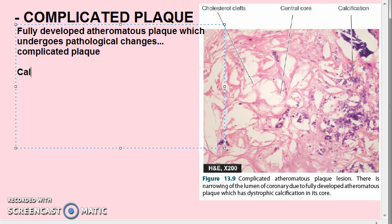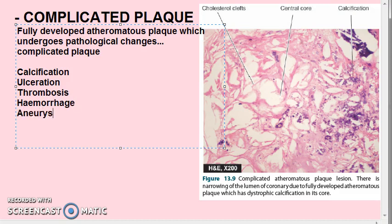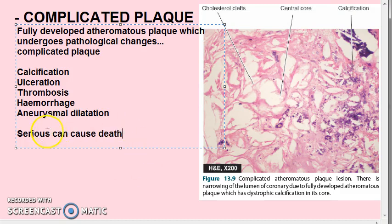The changes that can occur are: calcification, ulceration, thrombosis, hemorrhage, and aneurysmal dilatation. This complicated lesion is the most serious — it has harmful effects and can even cause death.